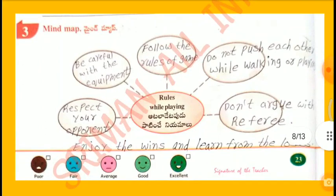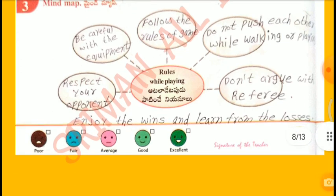Mind Map - Rules while playing: Respect your opponent team. Be careful with the equipment. Follow the rules of the game. Do not push each other while walking or playing. Don't argue with the referee. Enjoy the wins and learn from the losses.